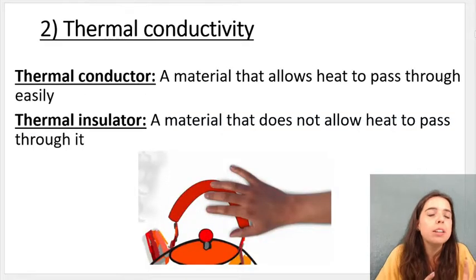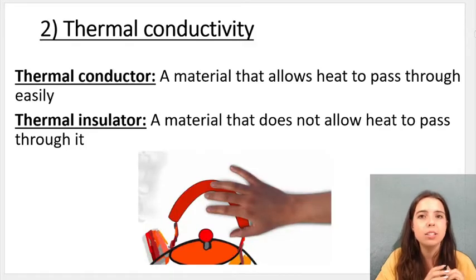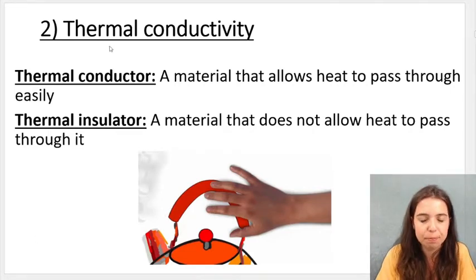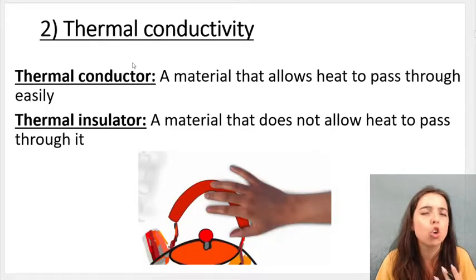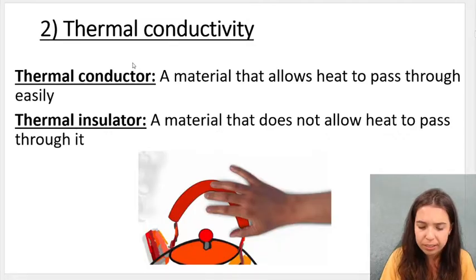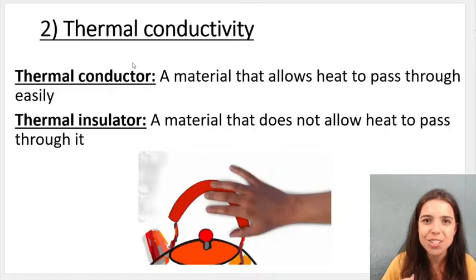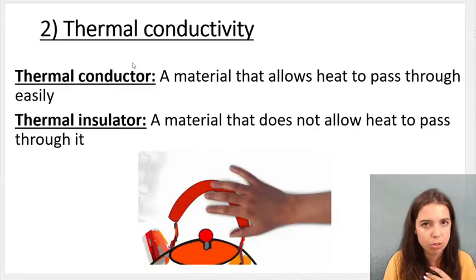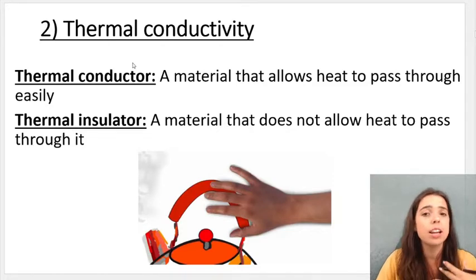We can also define materials as being thermal conductors or thermal insulators. The word 'thermal' means heat. A thermal conductor allows heat to pass through it easily, while a thermal insulator does the opposite. Metals are good thermal conductors — if you have a metal kettle on the stove you cannot just touch the handle, because metals conduct heat and allow it to pass through.